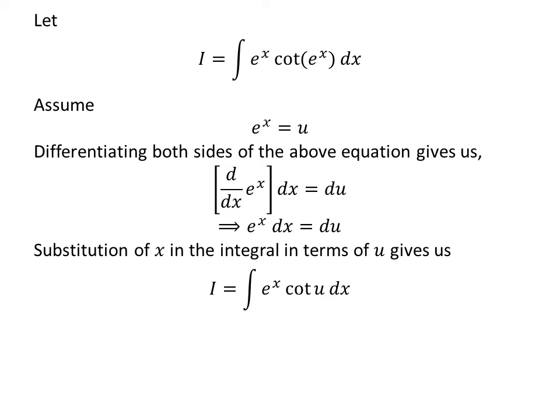Substitution of e^x by our assumed value u in the cotangent function part of the integral I gives us I equals the integral of e^x times cot(u).